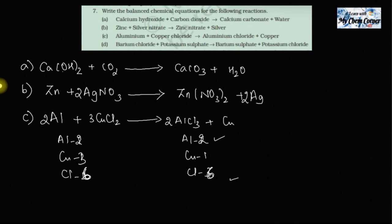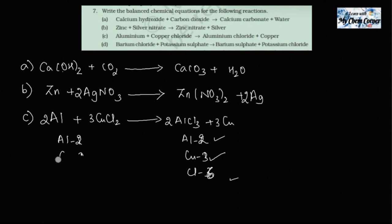Copper: there are 3 on the left, so I put 3 in front of Cu on the right — balanced. The key point is that when atoms are in a compound in odd numbers, we need to make them even by choosing the simplest even coefficient. When elements stand alone, odd numbers are fine because you can balance them individually.